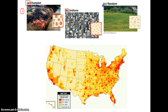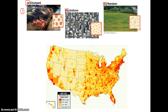Letter C shows random distribution, where there's really no rhyme or reason to why individuals are located where they are — it's totally random. These three examples illustrate population distribution, which simply means how organisms are spread out across the area they occupy.